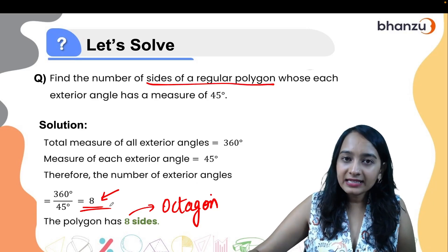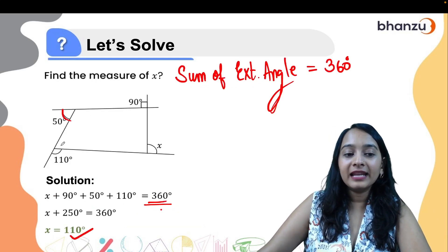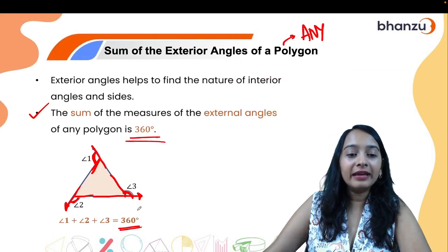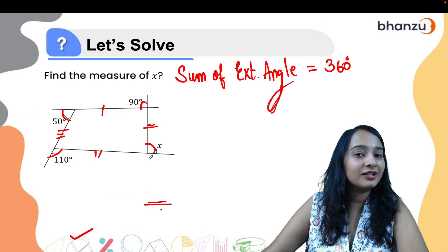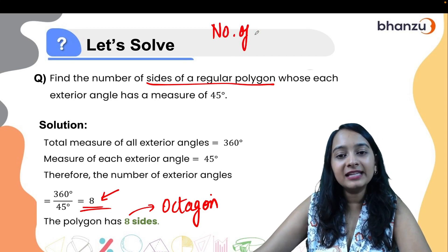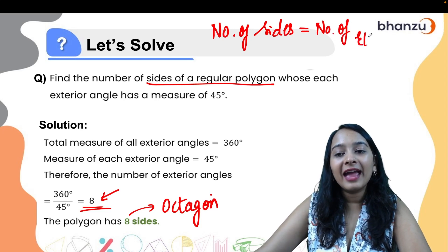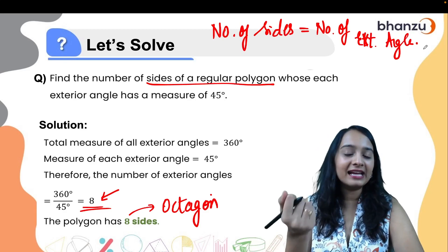Another conclusion: the number of exterior angles equals the number of sides. If a polygon has four exterior angles it is a four-sided polygon; three exterior angles means a three-sided polygon. So: number of sides = number of exterior angles.